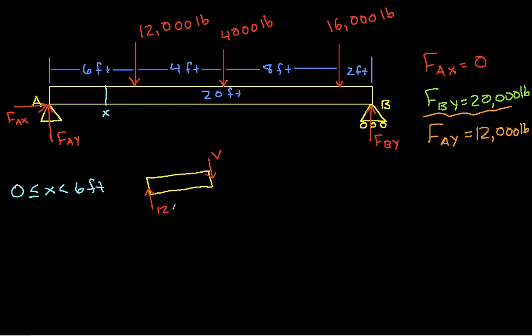To get the shear, the value of V, we just get the sum of forces in the vertical direction and set that equal to 0. So we have minus V plus 12,000 pounds equals 0, from which we get V equals 12,000 pounds. This is for the case where X is between 0 and 6 feet.